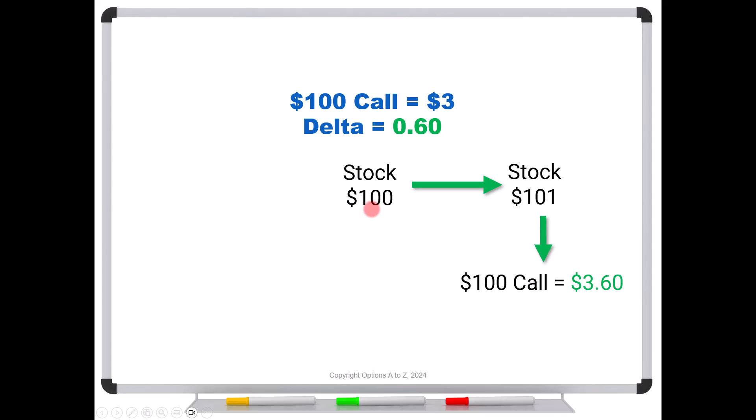But let's say that on the flip side, what if the stock falls from 100 to 99, now we have a $1 fall, we would expect that this call would lose 60% of that dollar fall, and should be trading for about $2.40.